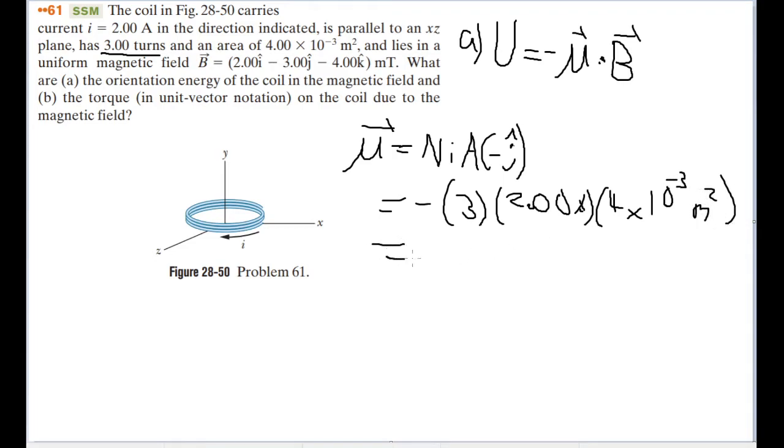And the area enclosed by the circle is four times ten to the negative third of meters squared. Plugging all this to our calculators, and don't forget to take into account the unit vectors, that is very important. The answer that I get for this is 0.024 ampere meters squared, and all this is a vector in the j direction.